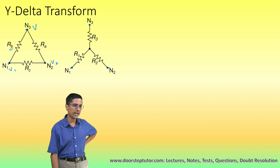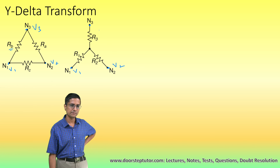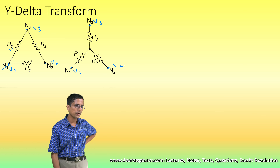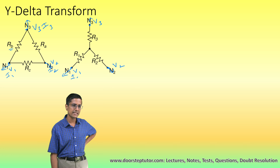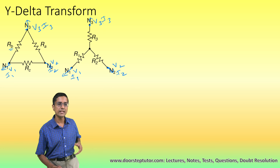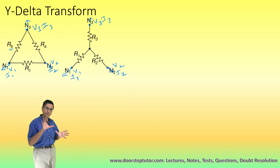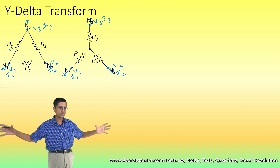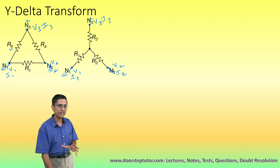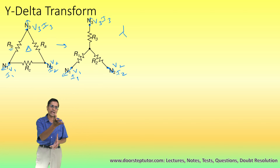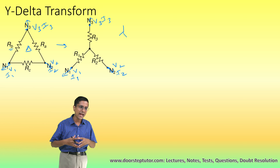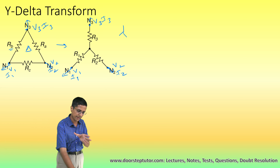When I say they are equivalent, it means that if I apply voltages V1, V2, and V3 across the three nodes N1, N2, N3 in both cases, I would get out the same current to the external circuit — the same currents I1, I2, and I3 to the respective external wires. So as far as the rest of the circuit is concerned, going from delta to star or star to delta does not really matter, because the voltage and current seen by the rest of the circuit remain exactly the same.